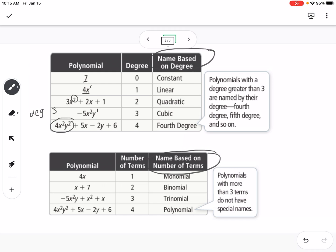Okay, and then based on the terms, if there's one term, so terms are separated by pluses and minuses. So if there's no adding or subtracting taking place, then you only have one single term. So that's a monomial. If you have two terms, so see we have an x and a 7, that's a binomial.